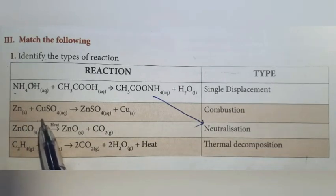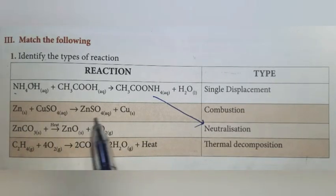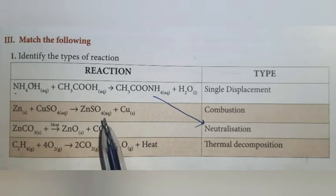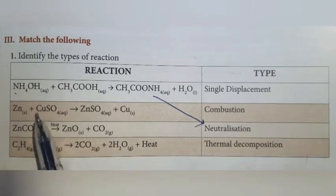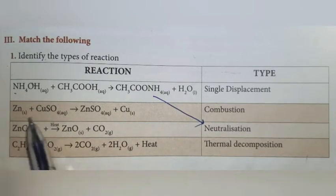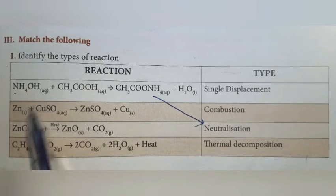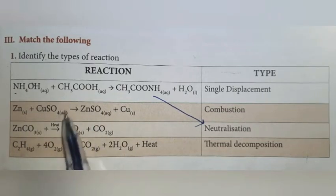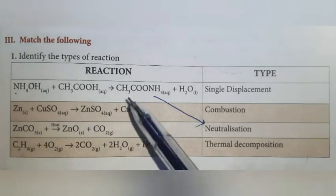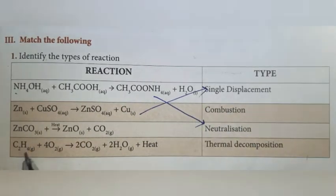Second: Zinc reacts with copper sulfate which gives zinc sulfate and copper. Here single displacement takes place. First, sulfate was with copper. After the reaction, now sulfate is displaced by zinc. So that's single displacement reaction.